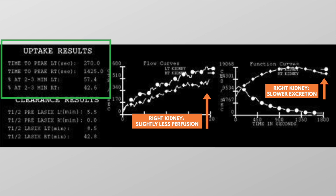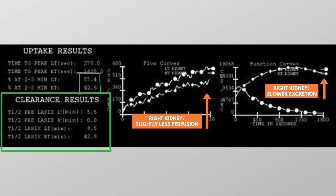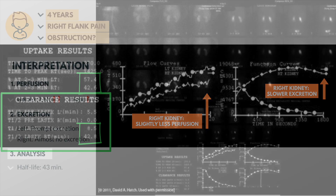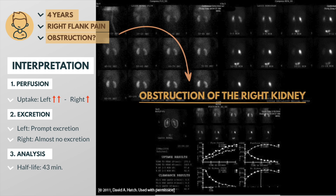The table on the left gives the differential function and the half-life. The differential function is the relative contribution of each kidney in relation to the total renal uptake — this should be more or less symmetrical, around 50%. In our case, the right kidney contributes 42.6% of total renal function, which is a bit lower than normal. The half-life is the time at which half of the radioactive tracer has drained; it should be less than 12 minutes. Our patient's right kidney has a prolonged half-life of almost 43 minutes. So all things considered, this boy has a significant obstruction of his right kidney.